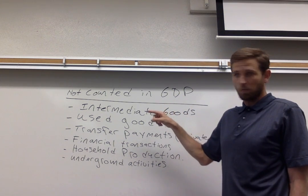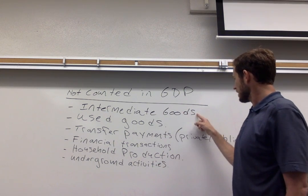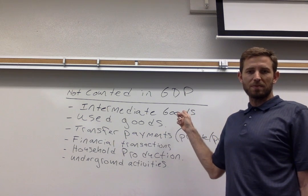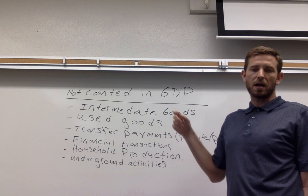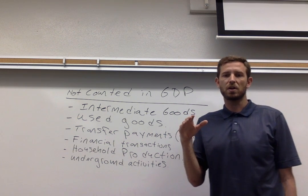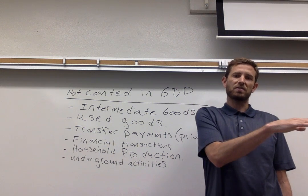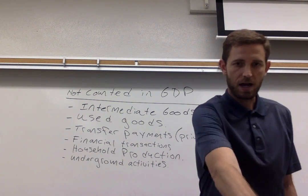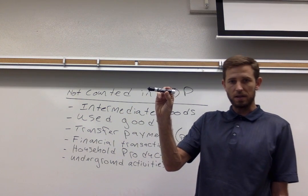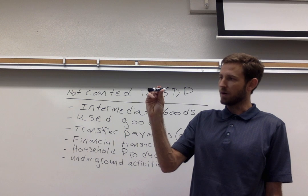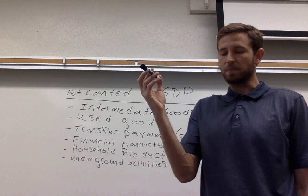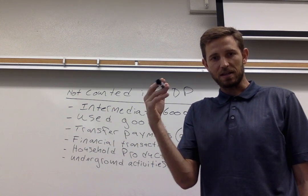You'll be able to see how this double counting would work with a lot of these. Starting with the top one: something that we don't count in GDP are items described as intermediate goods. An intermediate good is different than a final good in that intermediate goods are going to be used in the production of something else. For example, I've got here a pen made by Expo. In the production of this pen, Expo likely had to purchase all kinds of materials — some plastic and some ink and things like that.